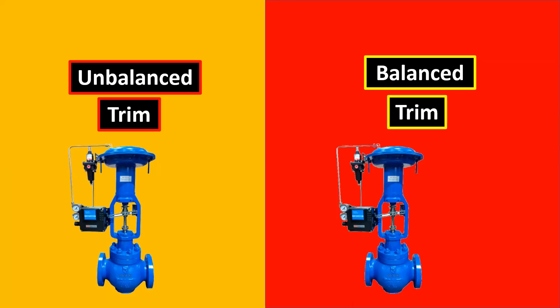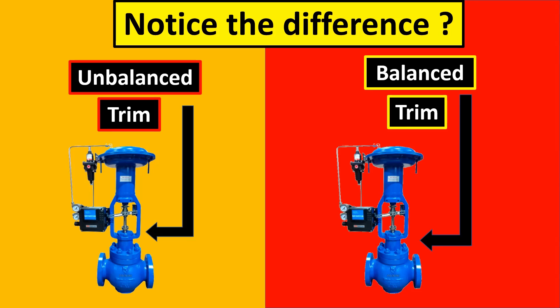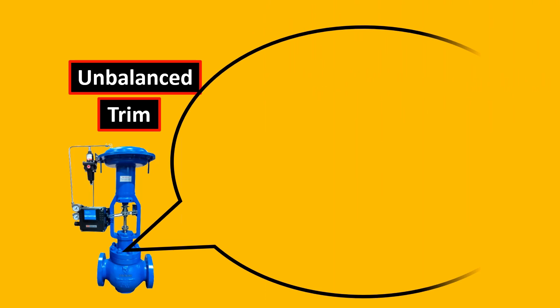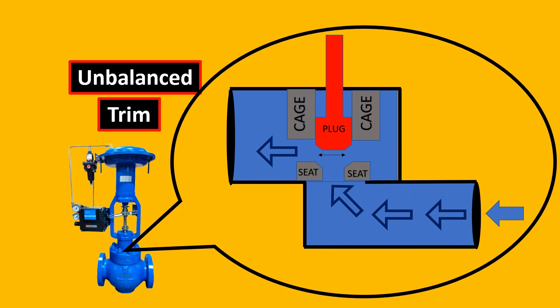This is an unbalanced trim and this is a balanced trim control valve. Do you notice any difference between them? The answer is no. The actual amazing thing lies inside the control valve. Let us understand the working between both of these cases.